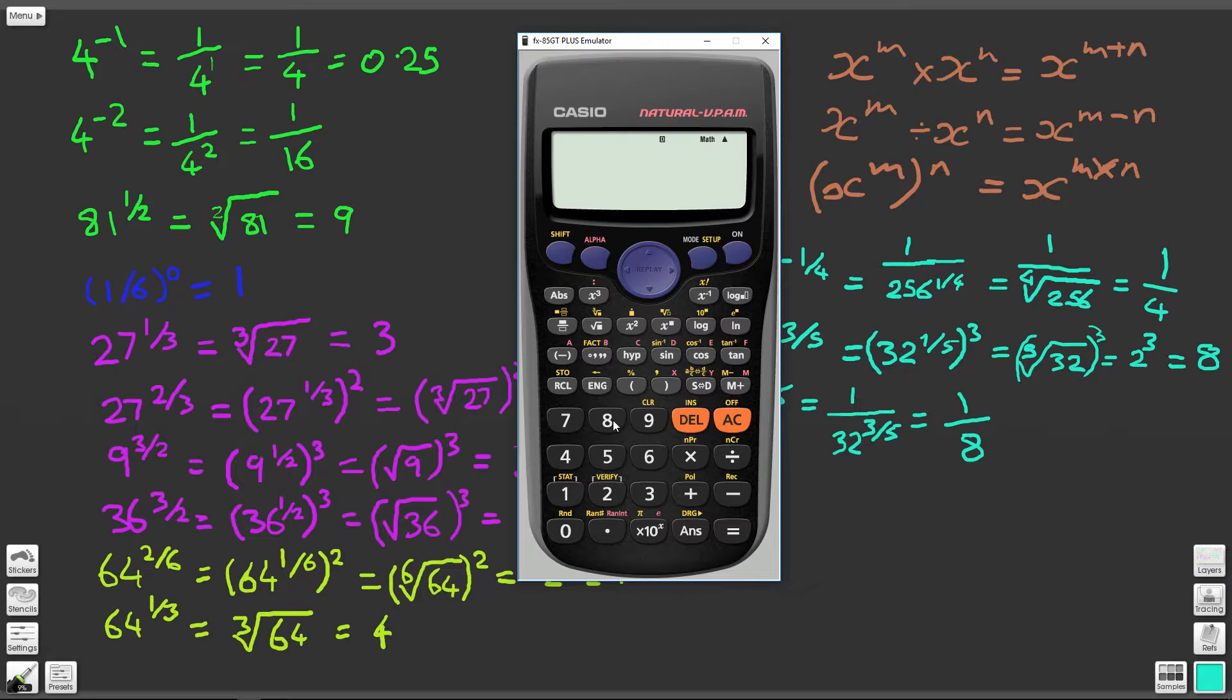And let's just do this slightly differently. 81 to the power of, and if we push that button there that will turn this into a fraction, so that gives us 1 over 2. So 81 to the power of half, and let's see if we come out with the same answer. Equals 9. So we've got that one right.